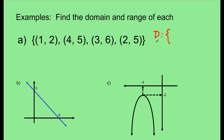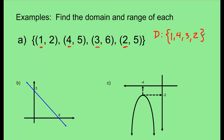We write domain as capital D, then a colon to show we're defining the domain, and then we open set brackets. Now I look at my points and ask, what are my x values? I have 1, 4, 3, and 2. So I list them: {1, 4, 3, 2}. Notice the order is not numerical — it doesn't matter. All I care about is that it's a list of the possible values of x. That's my domain.